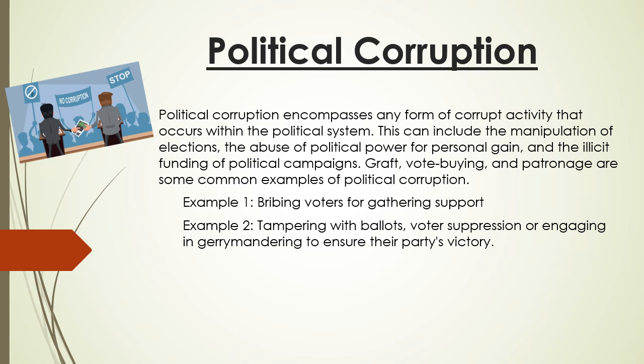The third form of corruption is political corruption. Political corruption encompasses any form of corrupt activity that occurs within the political system. This can include the manipulation of elections, the abuse of political power for personal gain, and the illicit funding of political campaigns. Graft, vote-buying, and patronage are some common examples of political corruption. First example: bribing voters for gathering support. Second example: tampering with ballots, voter suppression, or engaging in gerrymandering to ensure a party's victory.